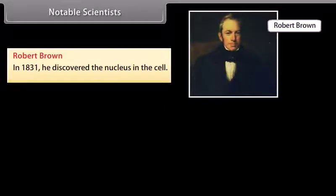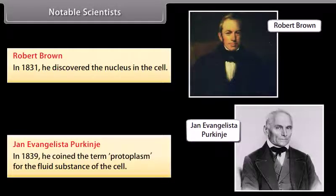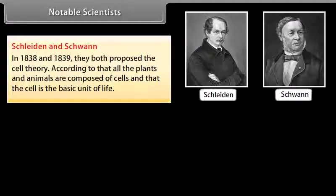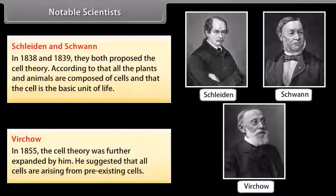Notable scientists: Robert Brown in 1831 discovered the nucleus in the cell. Jan Evangelista Purkinje in 1839 coined the term 'protoplasm' for the fluid substance of the cell. Schleiden and Schwann in 1838 and 1839 proposed the cell theory, stating that all plants and animals are composed of cells and that the cell is the basic unit of life. Virchow in 1855 further expanded the cell theory, suggesting that all cells arise from pre-existing cells.